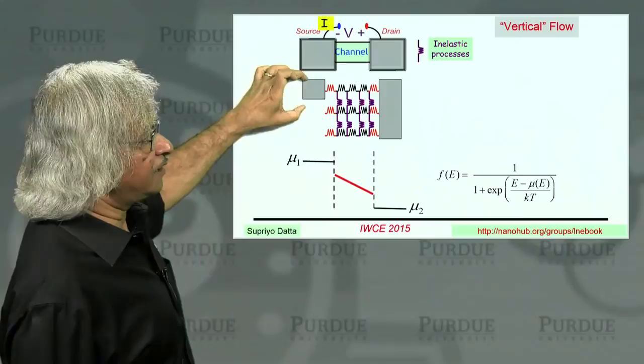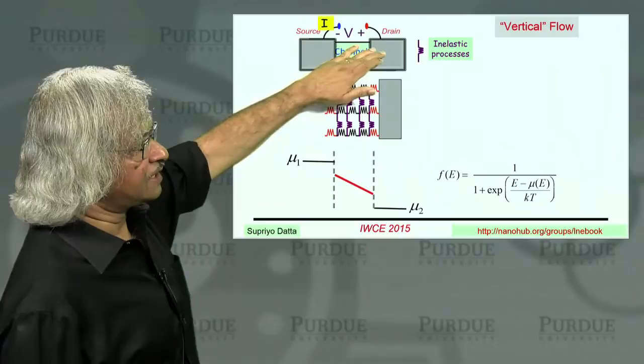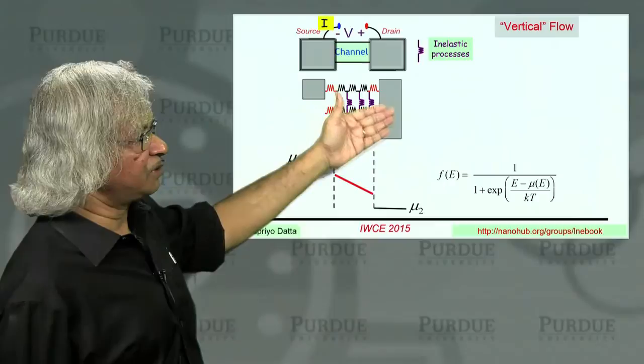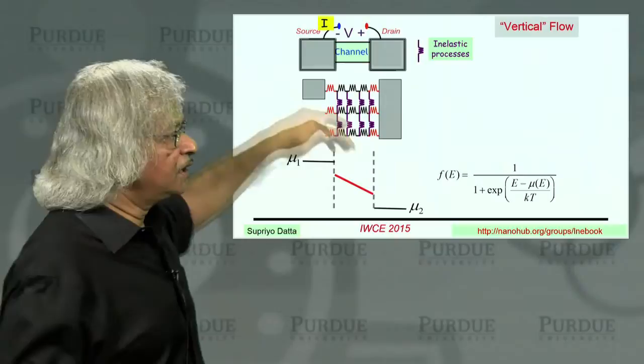So, at high bias, you could have a situation like this. And then, you tend to have flow that, this vertical flow. And so, if you ignore the inelastic processes, you would miss it completely. Or you could have something more subtle, like a p-n junction, where at the n-end, you connect to the conduction band. At the p-end, you connect to the valence band. And then, of course, recombination processes that take you from one band to another can be important.